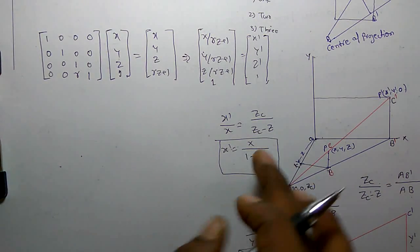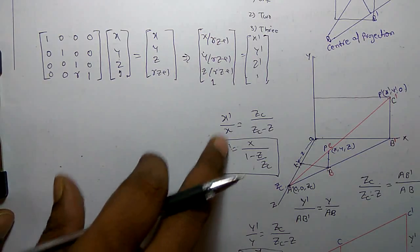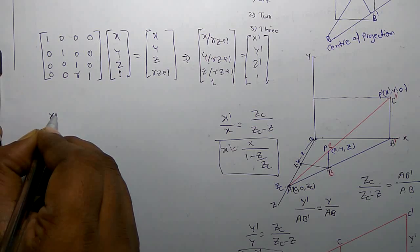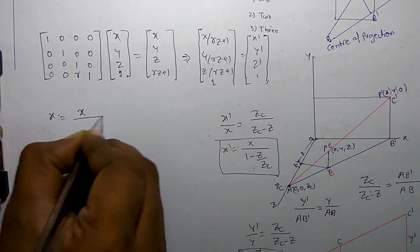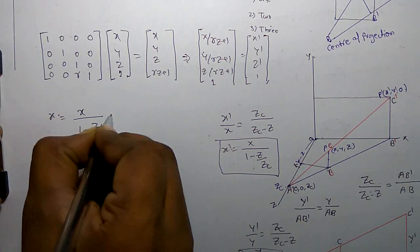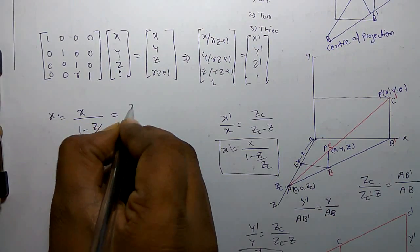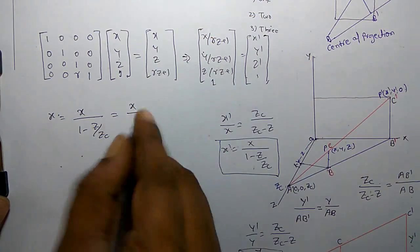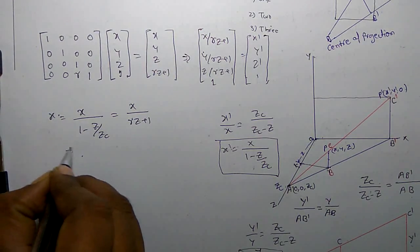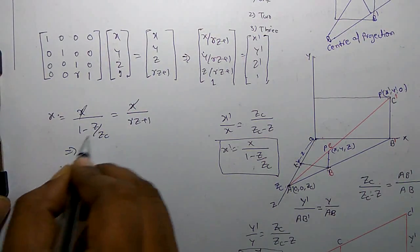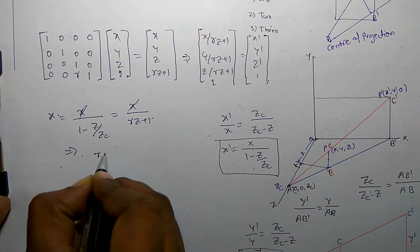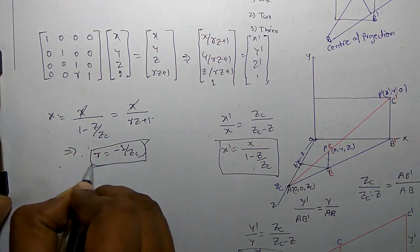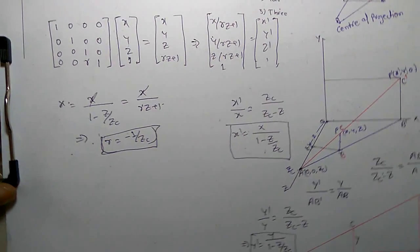Comparing these two values: X-dash equals X divided by (1 minus Z upon Z_C) from the derivation, and X divided by (RZ + 1) from the matrix form. After calculation, we find R equals minus 1 upon Z_C. This is the value of R for the matrix representation in perspective projection.